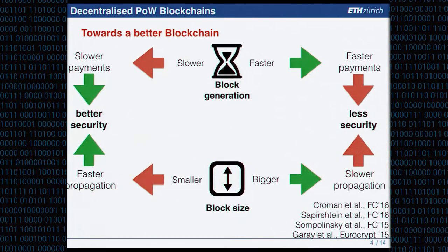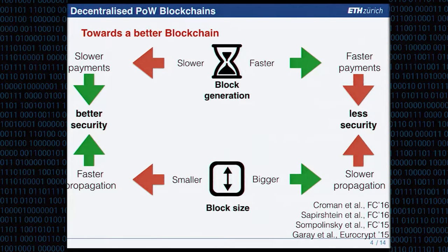On the qualitative side, we have well understood what happens if we increase the block generation speed: we get faster payments but security becomes worse. If we increase the block size, propagation becomes slower and we again get less security. If we make everything slower, we get slower payments, faster propagation, and better security, but less usability.